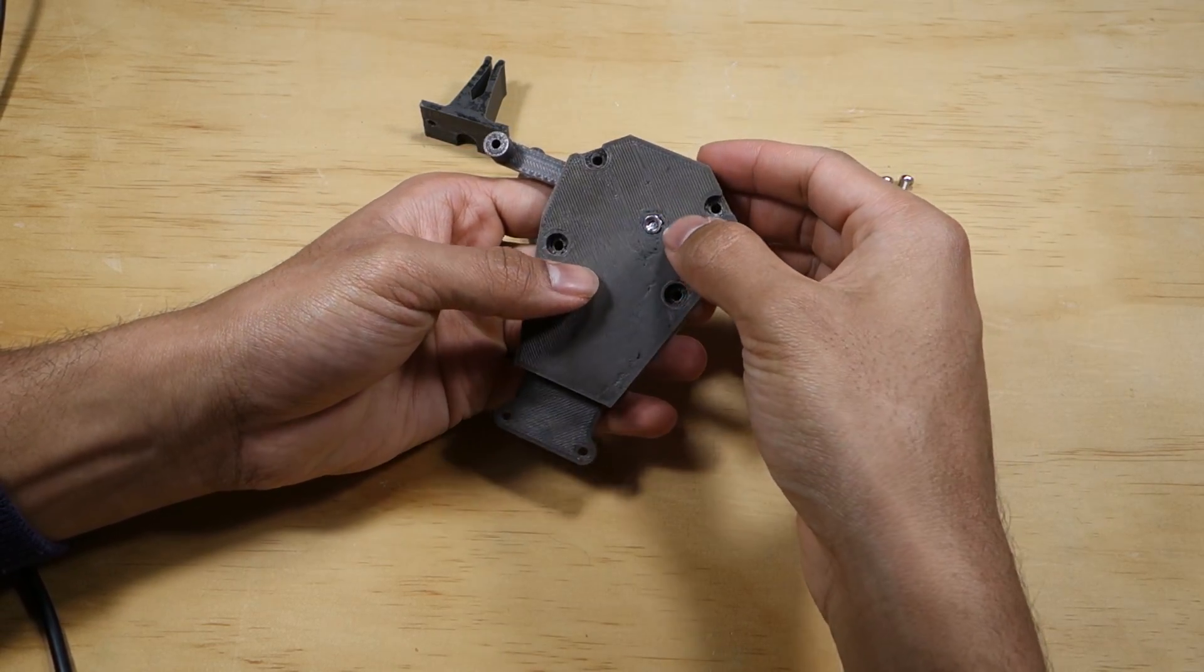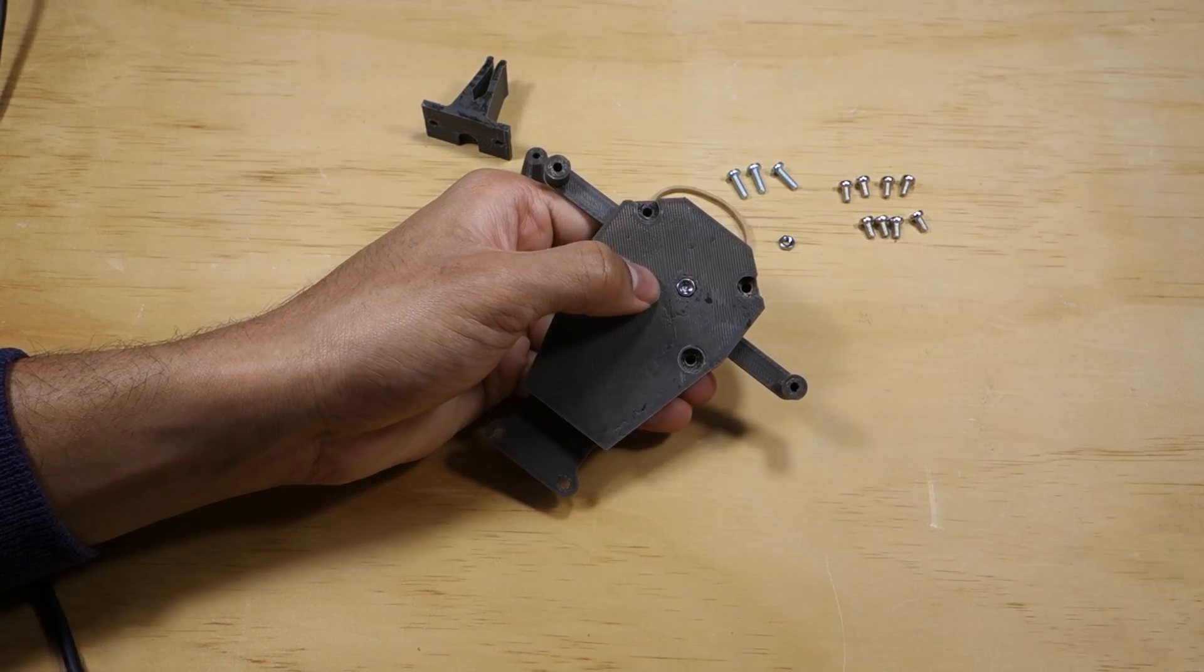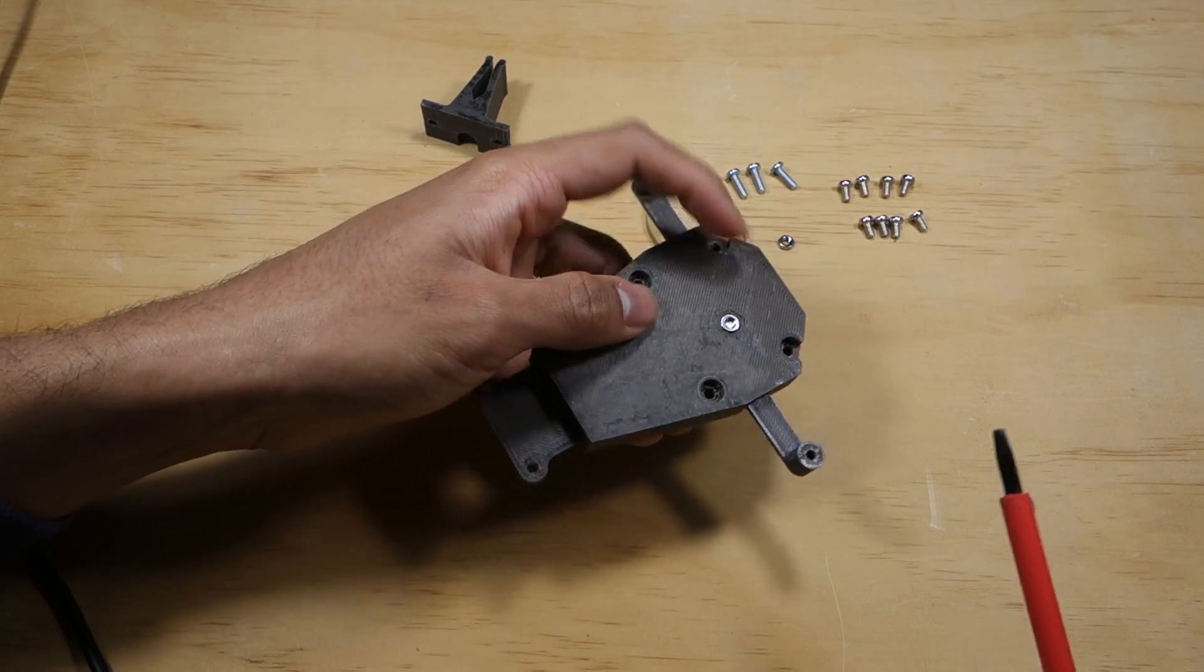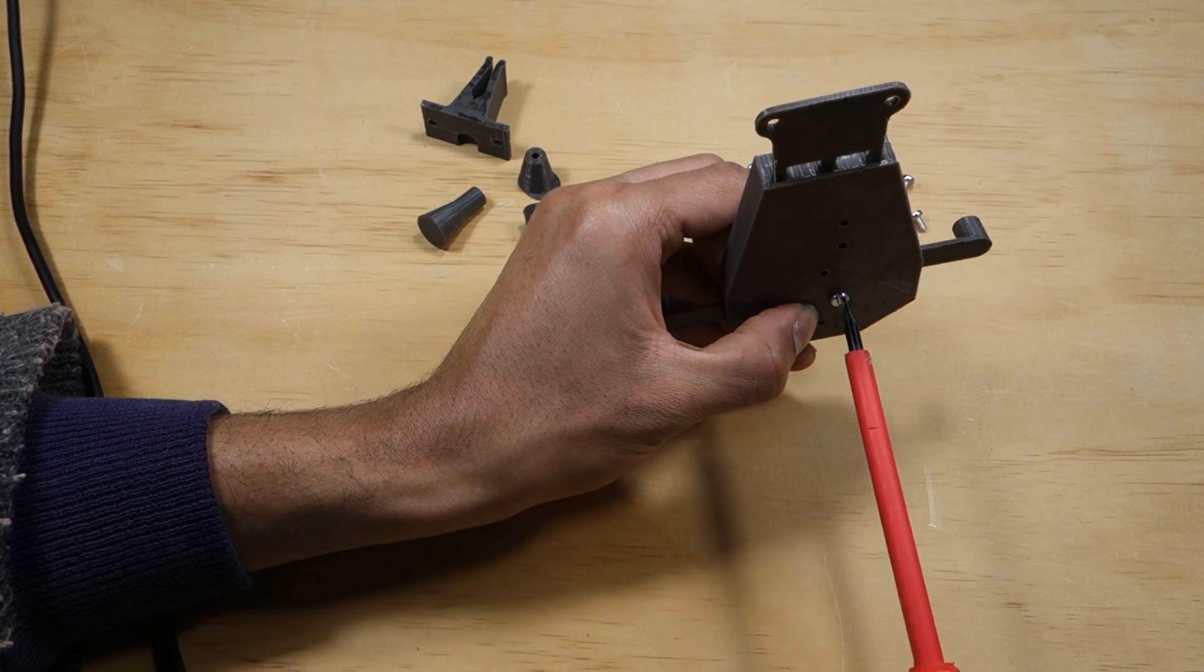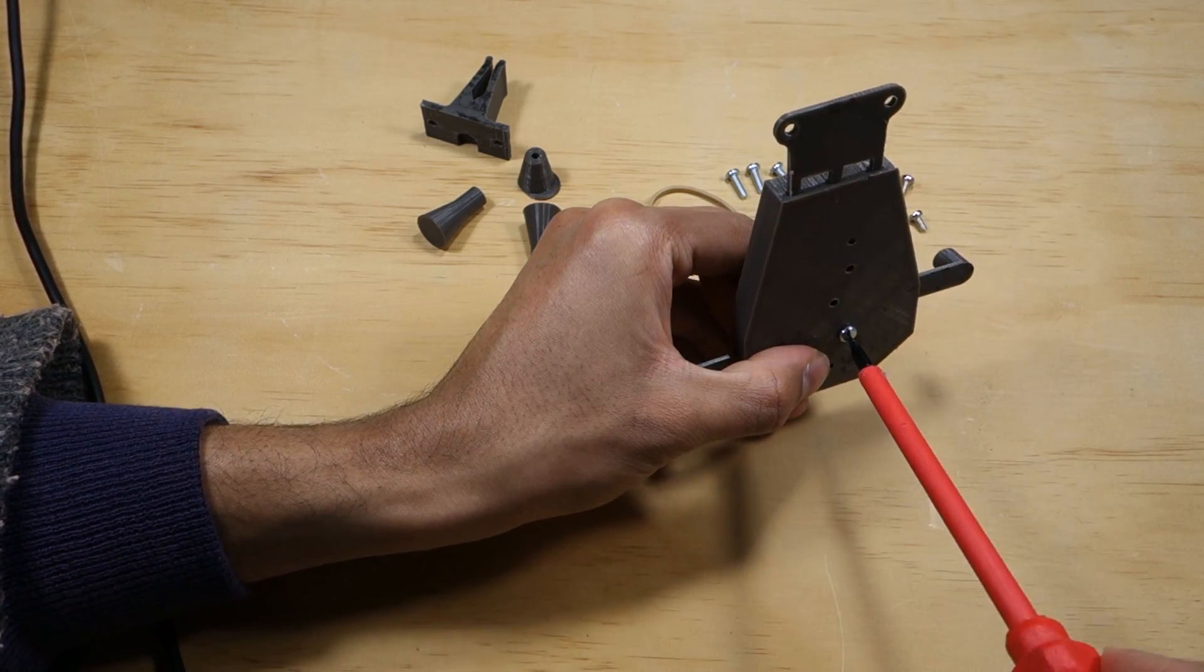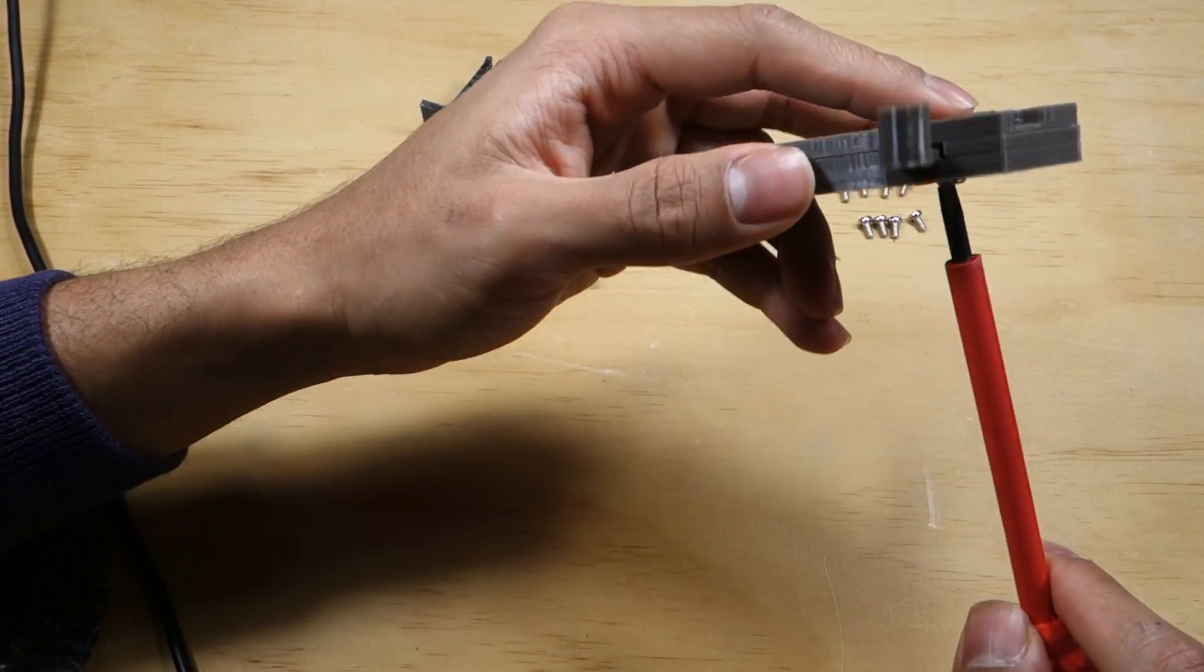Put the nut on the screw we inserted earlier and turn the screw so that the nut is captured. Do not tighten too much. Just turn until the screw is flush with the nut.